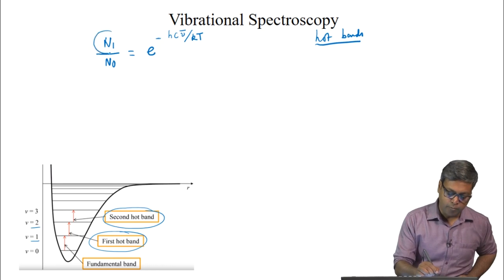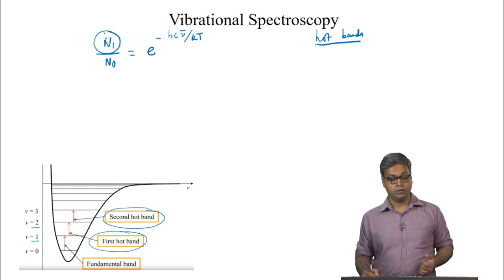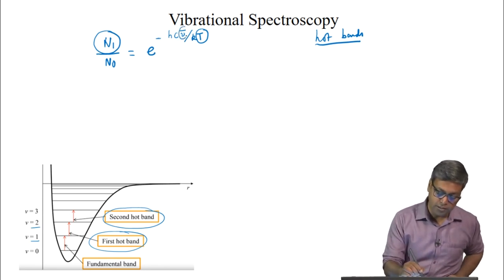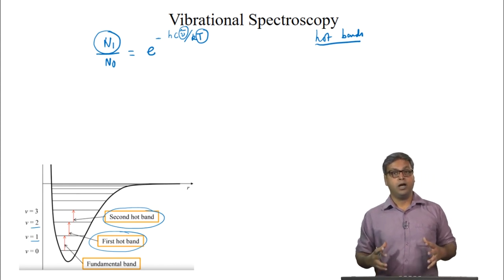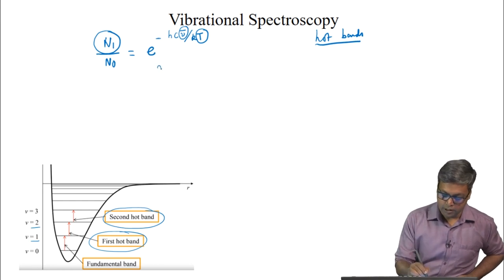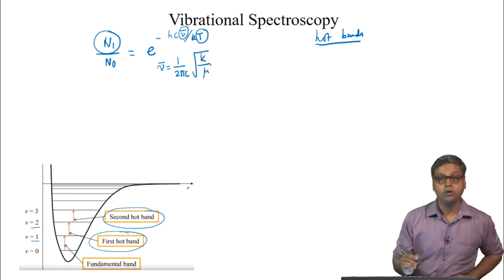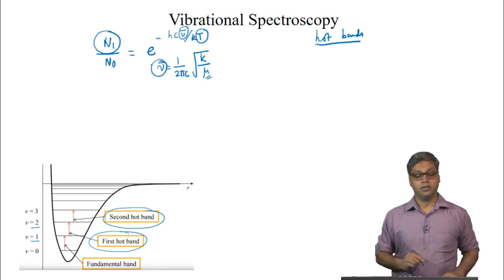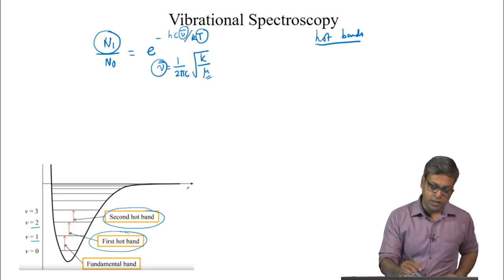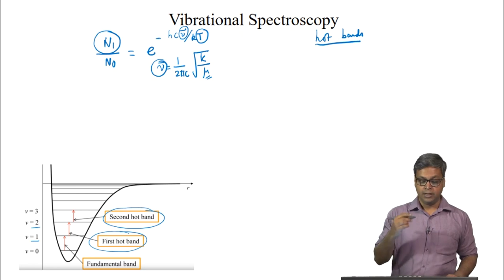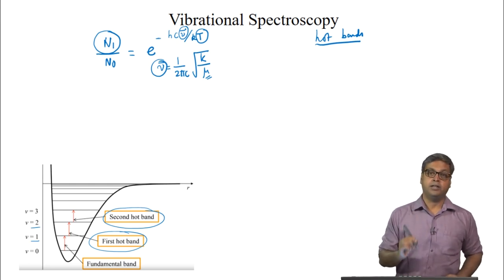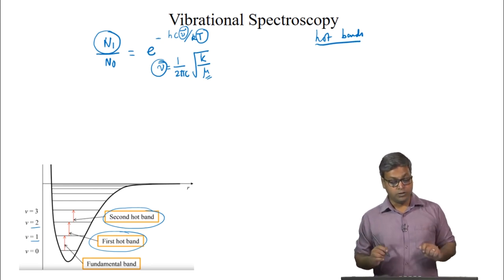We can increase the population in the V=1 state either by increasing the temperature or by decreasing nu-bar. For a heavier diatomic molecule, nu-bar is given by (1/2πc) times sqrt(k/mu). As mu increases for a heavier molecule, nu-bar decreases, and decreasing nu-bar has a similar effect as increasing temperature. However, we only see these hot bands in the IR spectrum because of anharmonicity.